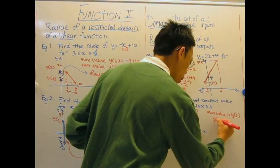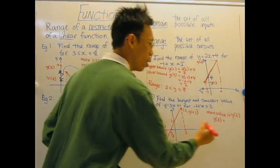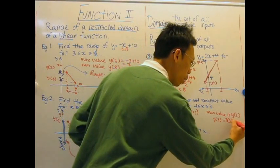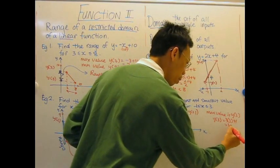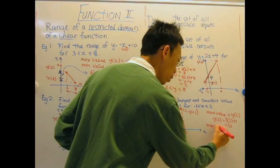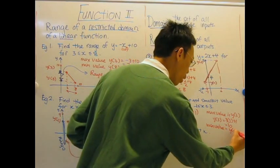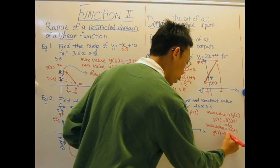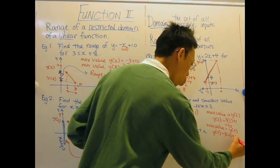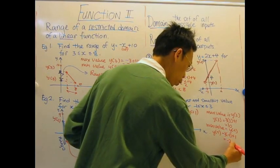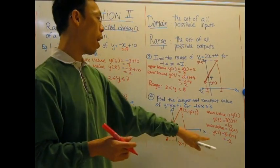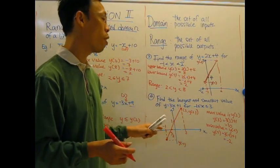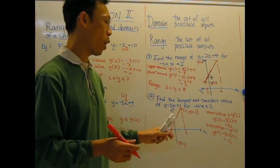And y of 3 is 3 times 3 plus 1, which is 10. And minimum value is y of negative 1, which is 3 times negative 1 plus 1, which is negative 2. So the minimum value for this function, the smallest value is negative 2. The largest value is 10.